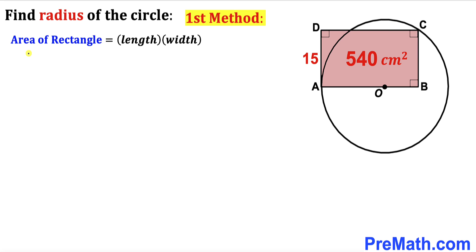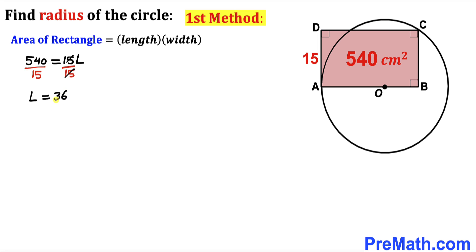Let's fill in the formula: 540 equals 15 times L. Dividing both sides by 15 to isolate L, the 15s cancel, and our length L turns out to be 36 centimeters. So side AB equals 36 centimeters.